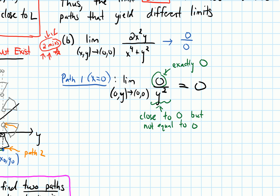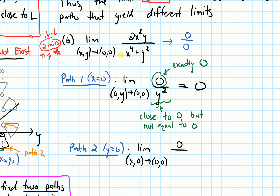For path 2, let's go along y equals 0 — the x-axis. The limit as (x,0) approaches (0,0): anywhere there's a y I plug in 0. The numerator gives 0 and the denominator gives x to the fourth. For the same reason as path 1, the numerator is exactly 0 but the denominator is close but not equal to 0, so this limit is also 0. We got 0 for both paths, so based on these alone we can't conclude whether the limit exists or not.